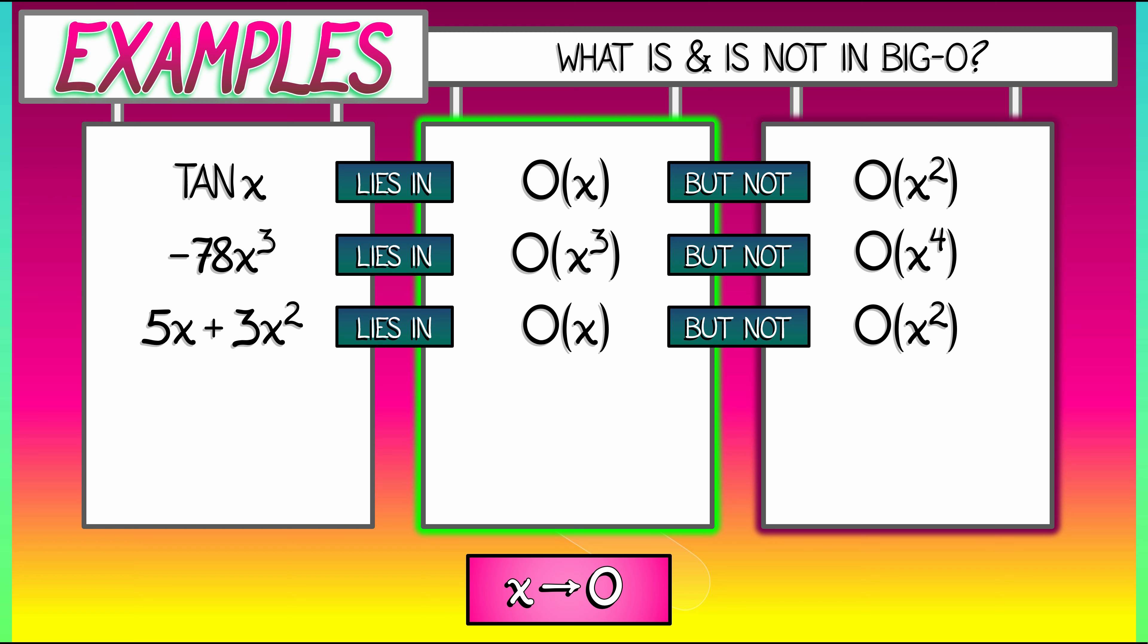Consider the function x minus sine of x. Knowing what we know about Taylor expansions about zero, we can easily see that this lies in big O of x cubed, but not in big O of x to the fourth. There's definitely a cubic term inside of there that determines what big O it lies in.